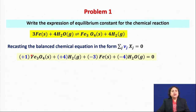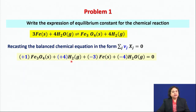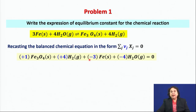For j = 1, Fe₃O₄ solid is the first component, with stoichiometric coefficient ν₁ = +1. For j = 2, hydrogen gas is the second component, with coefficient ν₂ = +4. For j = 3, iron solid has coefficient ν₃ = −3.